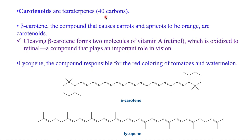Carotenoids are tetraterpenes containing 40 carbons. Beta-carotene is an example — its structure gives the orange color to carrots and apricots. When you cleave beta-carotene, you get two molecules of vitamin A, which is retinol. Oxidation of retinol gives retinal, which is an aldehyde that plays an important role in vision. Lycopene is responsible for the red color of tomatoes and watermelon.